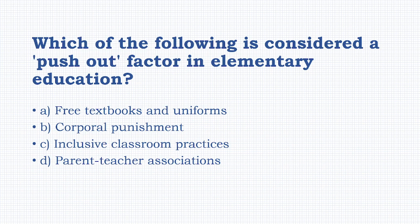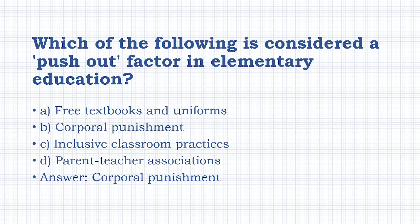Which of the following is considered a 'push-out' factor in elementary education? Options: free textbooks and uniforms, corporal punishment, inclusive classroom practices, parent-teacher associations. The answer is: corporal punishment.